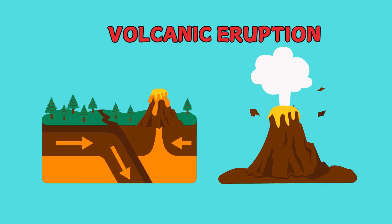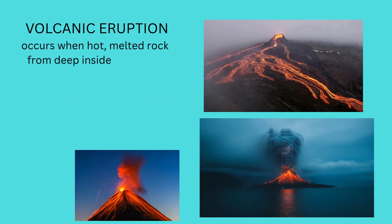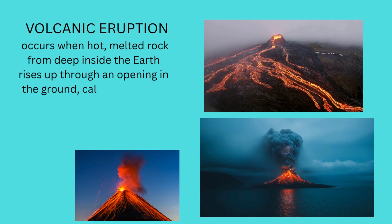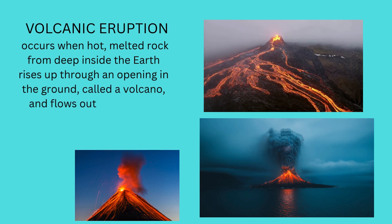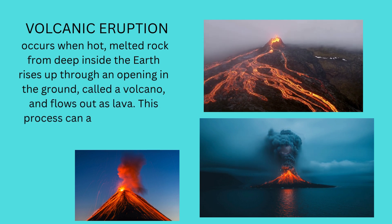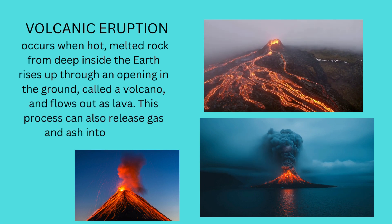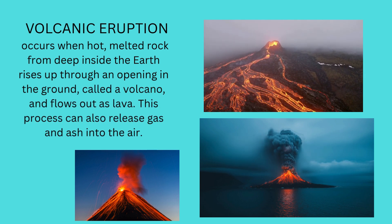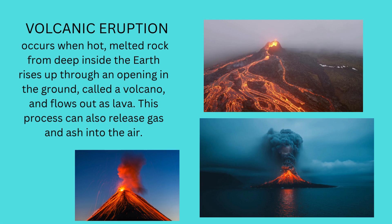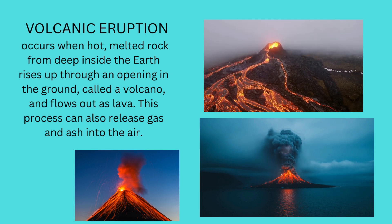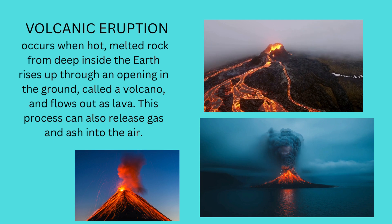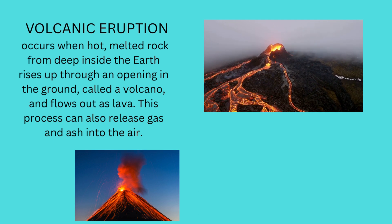Volcanic Eruption. Volcanic eruptions occur when hot, melted rock from deep inside the earth rises up through an opening in the ground called a volcano and flows out as lava. This process can also release gas and ash into the air.